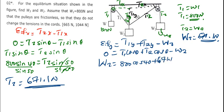So if I plug in the values, my T2 we found 1044, so let's say 800 cos 40.